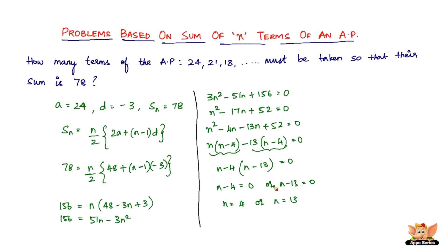It can either be 4 terms or 13 terms. So it takes 4 terms of the AP or 13 terms of the AP to get to a sum of 78. So going by this, it should probably be 24 plus 21 is 45, 45 plus 18 is 63, 63 plus 15 is 78. So we've got 24, 21, 18, and 15. Adding all this, the answer is 4.